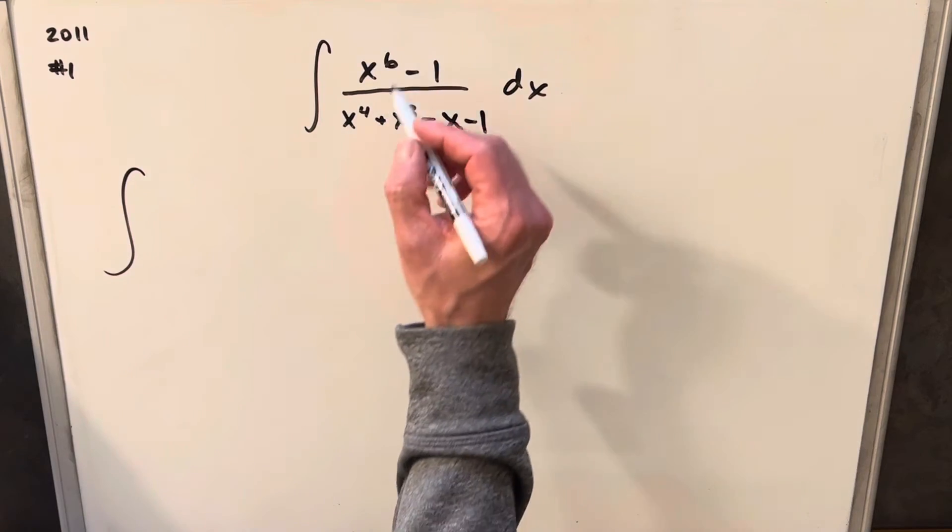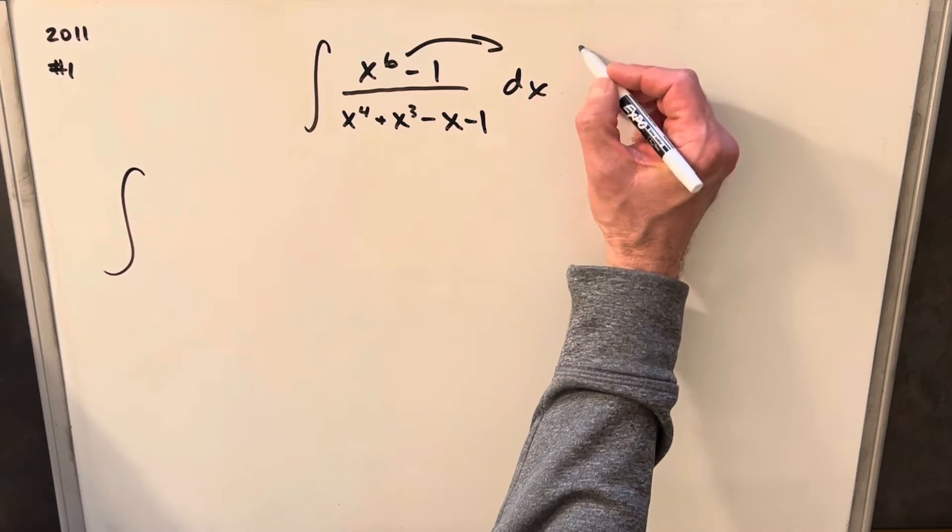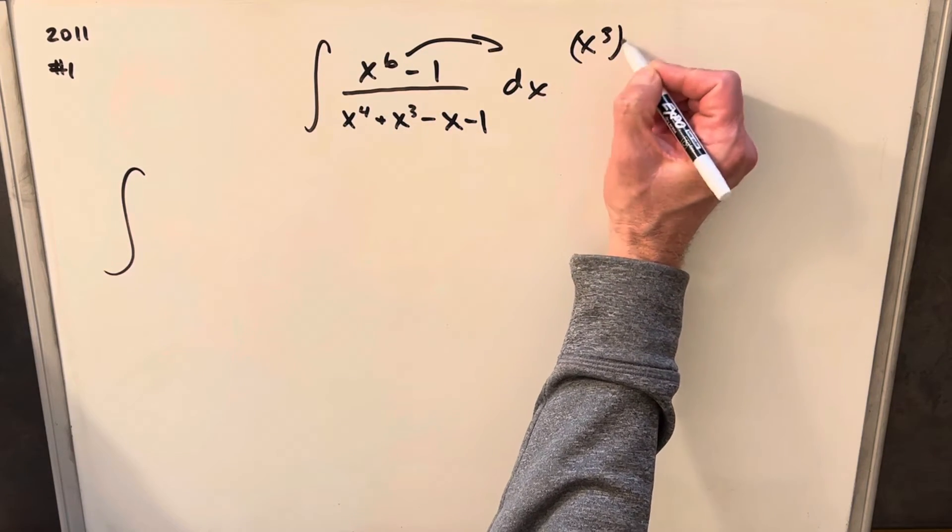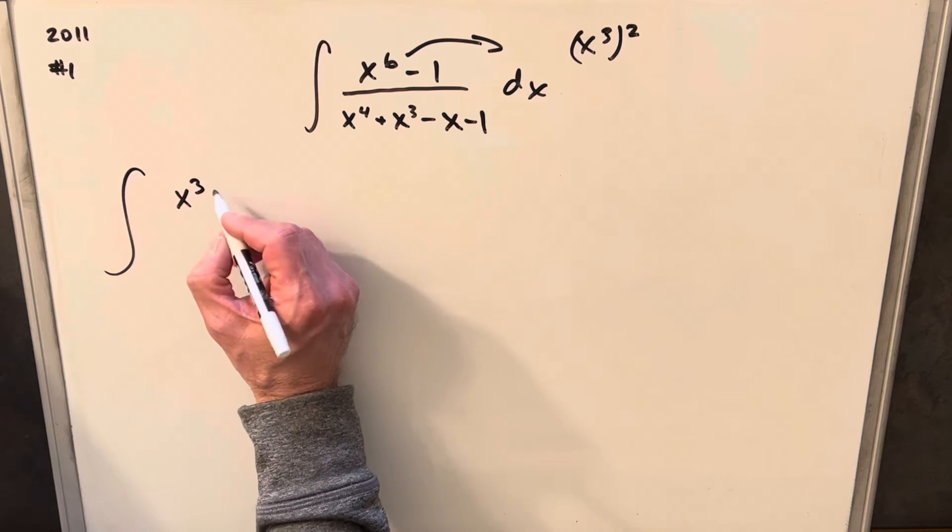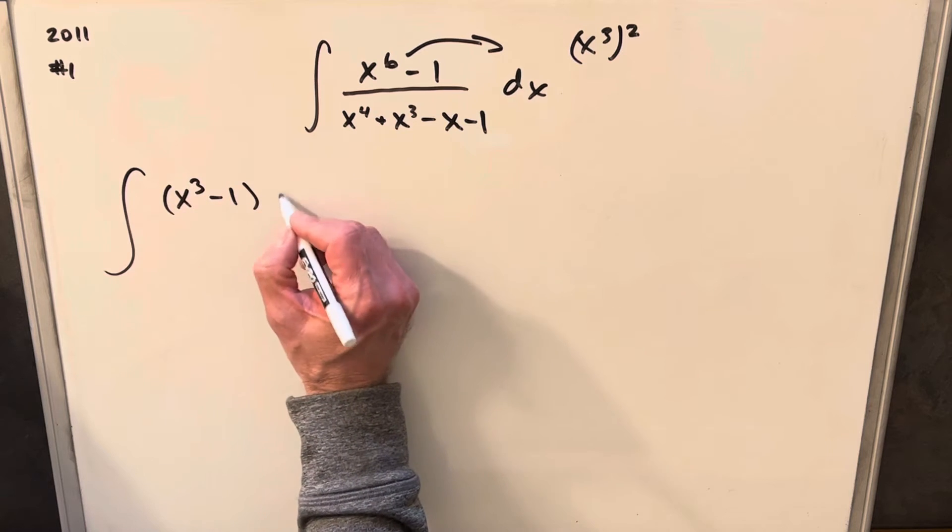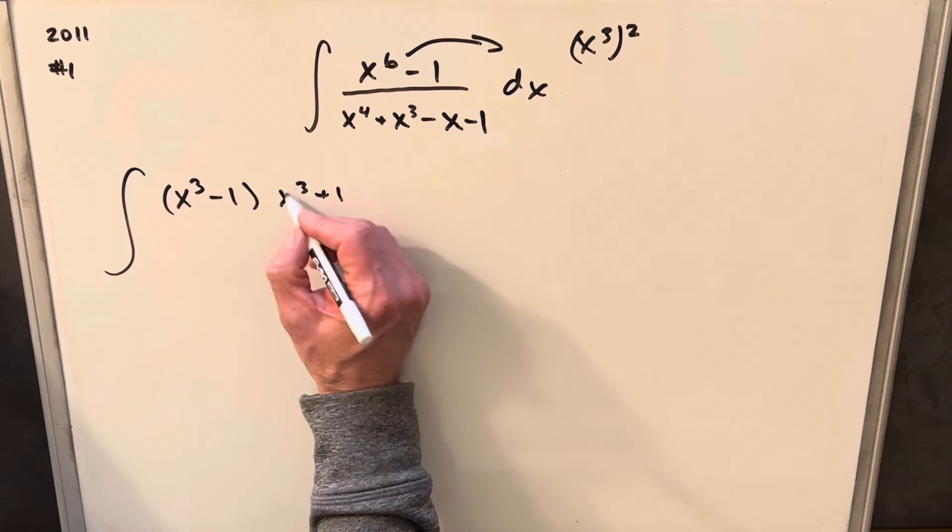To begin, on the numerator, we're just going to notice that x to the 6 is the same thing as x cubed squared. So I can write this as the difference of two squares. I can write this as x cubed minus 1 times x cubed plus 1.